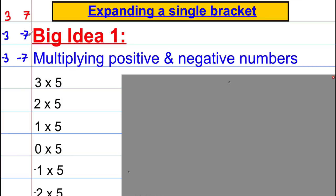We need to be able to multiply positive numbers with positives, negatives with negatives, and positives with negatives. Positive 3 multiplied by positive 5 is positive 15. Positive 2 multiplied by positive 5 is 10. Positive 1 multiplied by positive 5 is 5. And 0 multiplied by 5 is 0, because 0 multiplied by anything is 0.